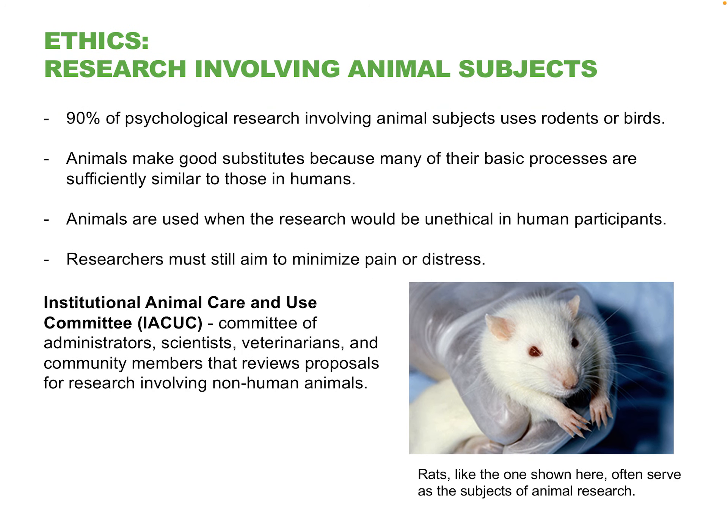Lastly, animal subjects. This is still very controversial. Most psychological research — about 90% — tends to use rodents or birds. But you can make a good case that even rodents and birds perceive pain, depending on what you want to do to them. Sometimes researchers want to test things on animals that would be unethical in humans. There are many cases where it's possible to do the research without animals or without harming them. This is still a tricky area with no easy answers.